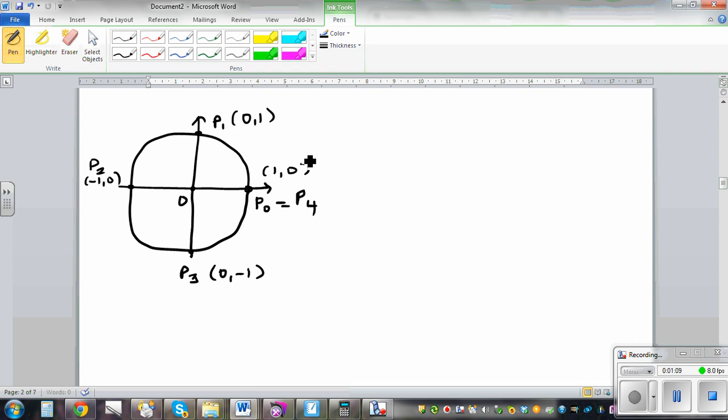So let's draw a right-angled triangle, and let's take an arbitrary point P here, having coordinate x, y. And this is an arbitrary angle theta. So this is say M.